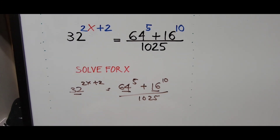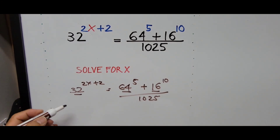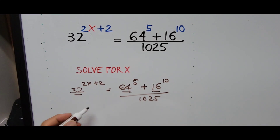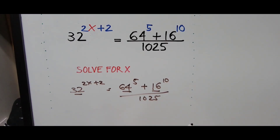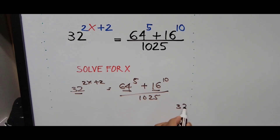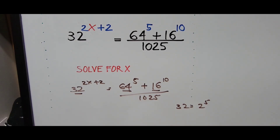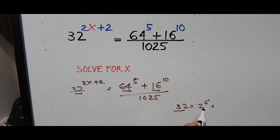If we focus on the left side of the equation, we have 32. Number 32 can be written the same way as 2 to the fifth power, since 2 to the fifth power is 32 — that is multiplying 2 by itself 5 times.